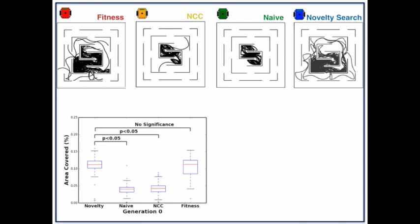This difference is significant as indicated by the cross bars above the box plot. We can also see that novelty search travels the same amount as the traditional objective-based EA.